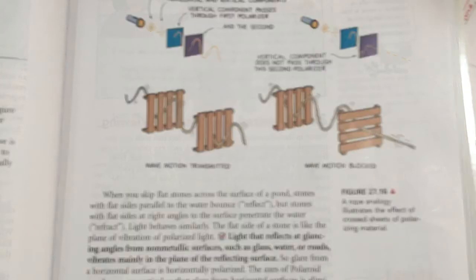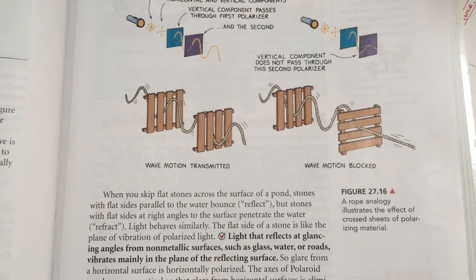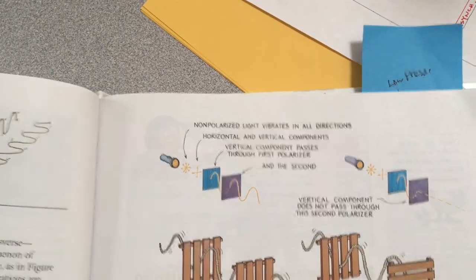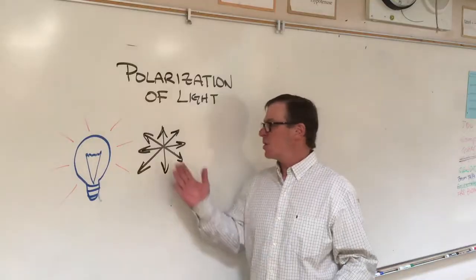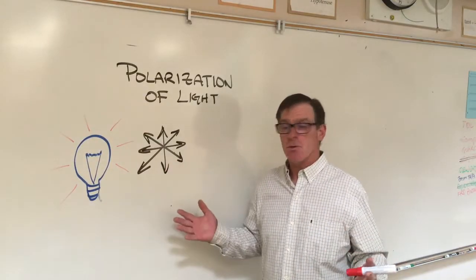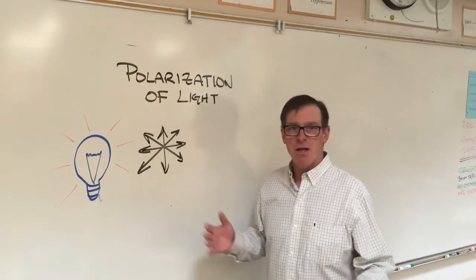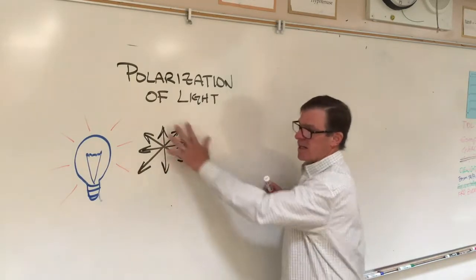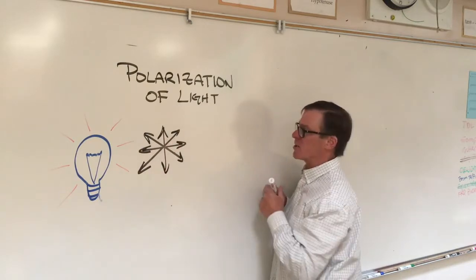In the same way, light can be put through a polarizer and I want to talk about that real quick and then demonstrate it for you. So again, light from a typical source like a light bulb or the sun or the sky is typically not polarized. It's vibrating in all possible directions.